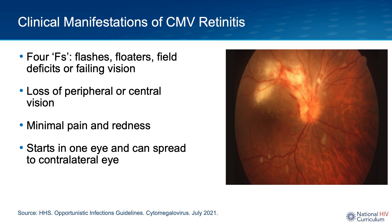The figure shown on this slide shows CMV retinitis involving the central portion of the retina in an individual with HIV. This retinal photograph shows an opacified edematous retina, seen in yellow, and a hemorrhage seen in red. The retinitis involves the optic nerve head and extends adjacent to the macula along the retinal blood vessels. This lesion is considered an immediate sight-threatening lesion.